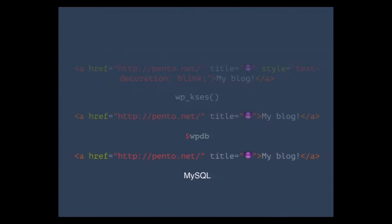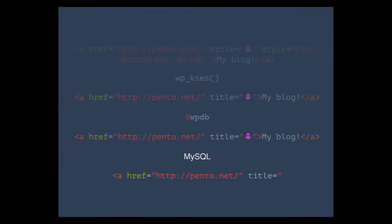WPDB also assumes that the data it sends to MySQL will be written to the table exactly as it's sent — this turns out to be not correct. Remember what I said earlier about MySQL not being able to store emoji in the UTF-8 character set? What MySQL does is truncate the string immediately before the character it doesn't recognize. That gives us totally invalid HTML, and we've written unverified HTML to the database — it can be used as a vector for a cross-site scripting vulnerability.